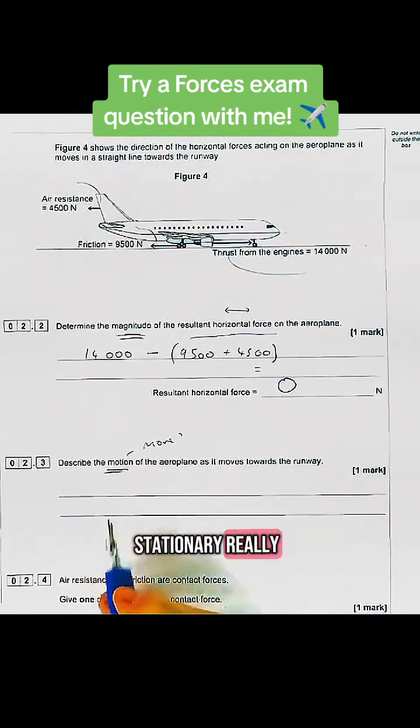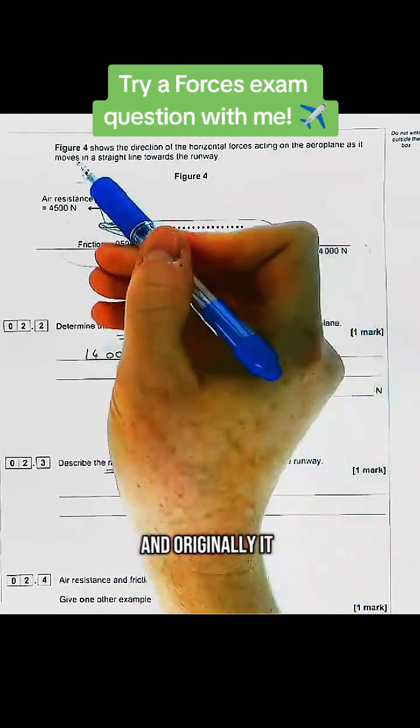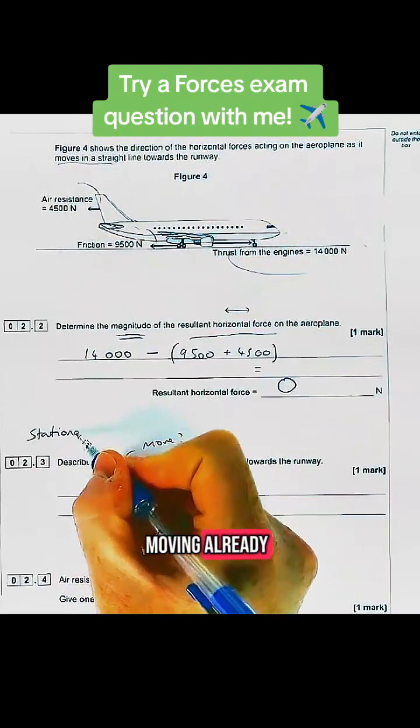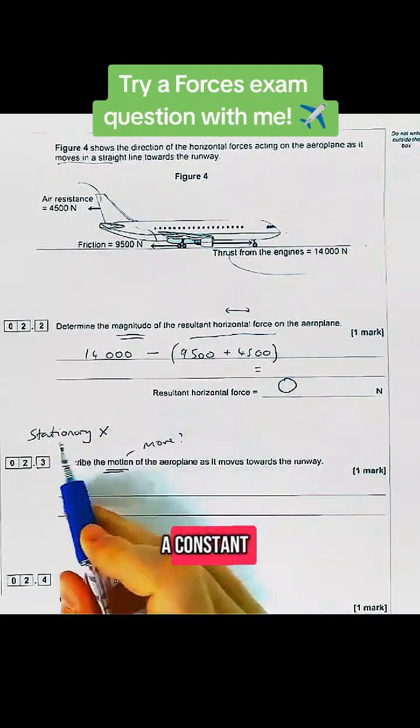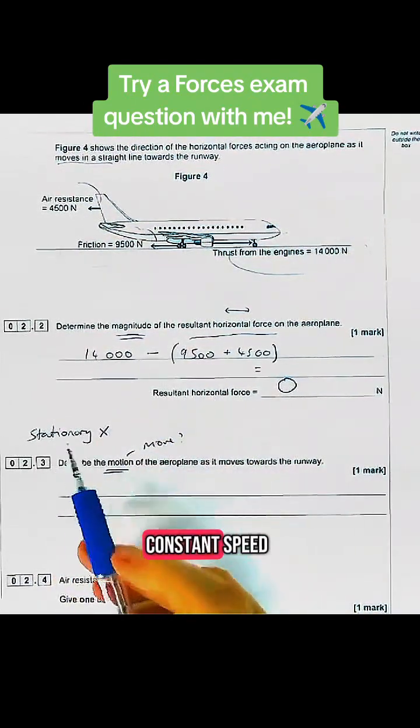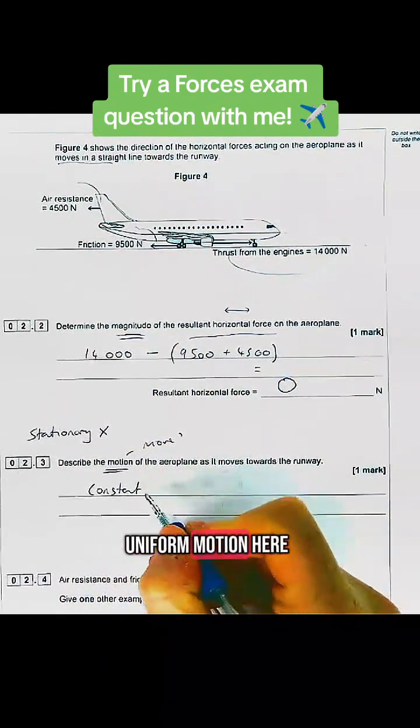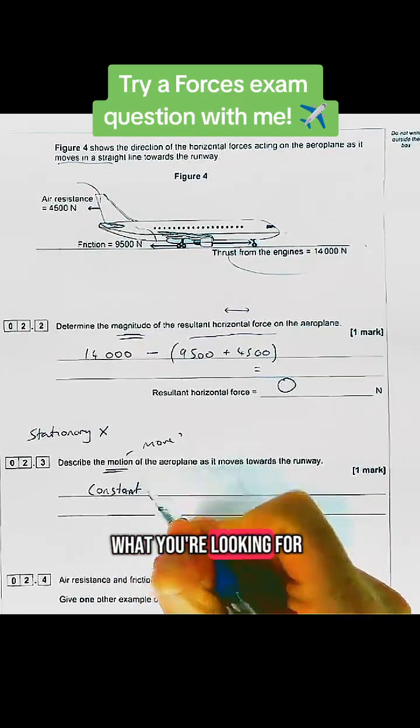Really common misconception - if it was stationary originally, it would be stationary now. However, it's moving already, so if it's moving already, it's going to travel at constant velocity or constant speed. Don't say constant motion or uniform motion here. Constant velocity is what you're looking for.